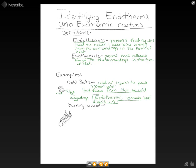Now let's look at another example: burning wood. If we compare our surroundings to the burning log, our surroundings are going to be colder than the burning log, which is hot. So heat flows out of the burning log into the surroundings. Looking at our definitions, heat flowing out corresponds to exothermic — burning wood is exothermic because heat is released to the surroundings.